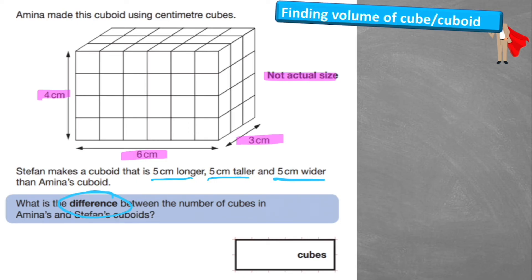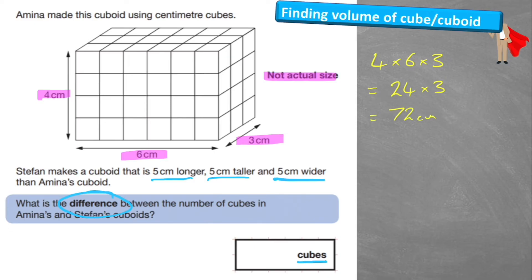This is interesting because we've got our measurements in cubes rather than centimetre cubes, but it's exactly the same thing — don't be confused by that. First of all, let's work out Amina's cuboid: 4 times 6 times 3. 4 times 6 is 24, times 3 equals 72 centimetres cubed. So Amina has 72 cubic centimetres, meaning 72 cubes.